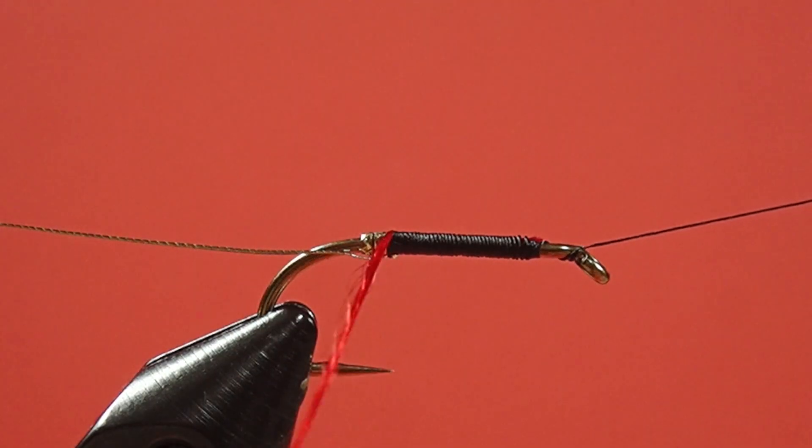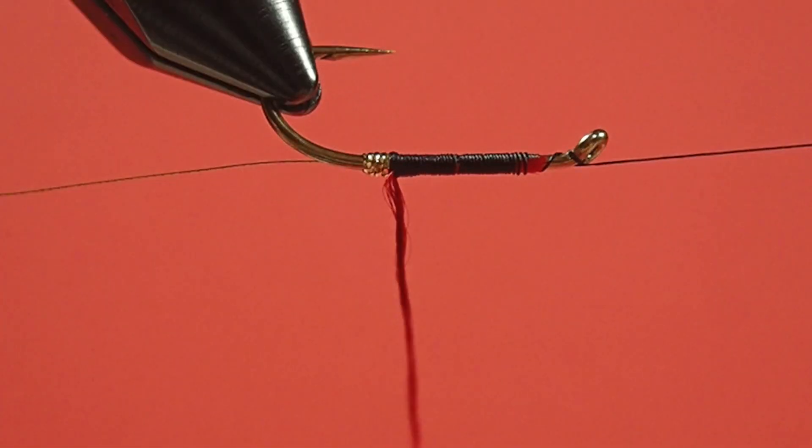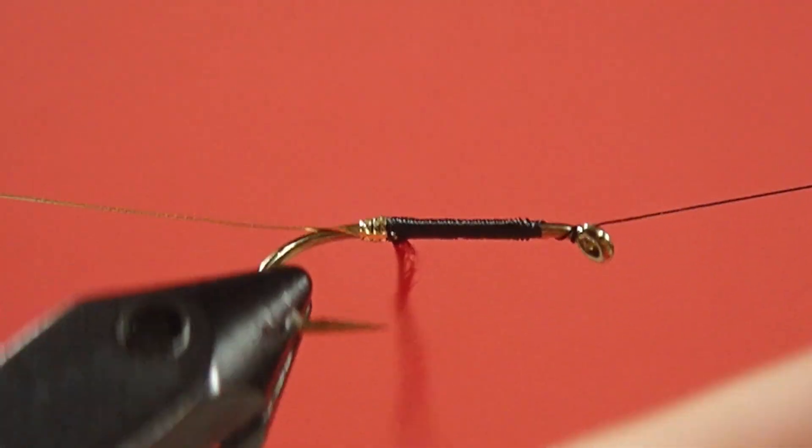Now for our floss. As usual, pull the twist out. Flatten it out. Watch out for that hook point.